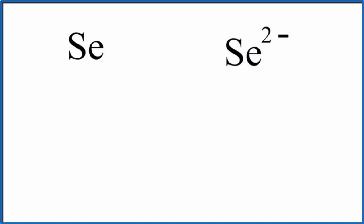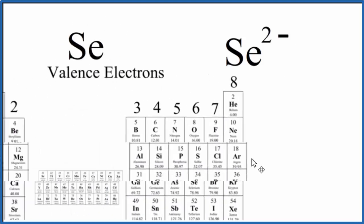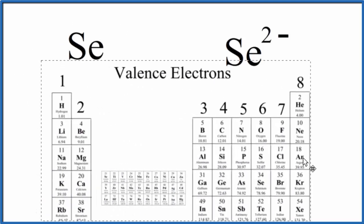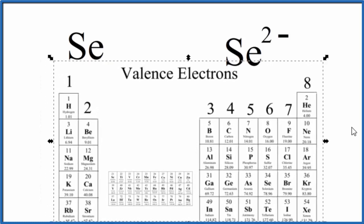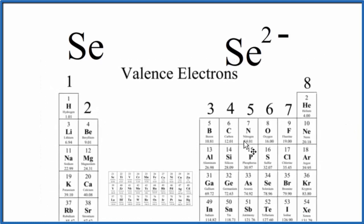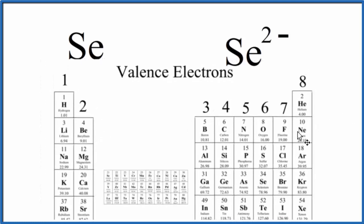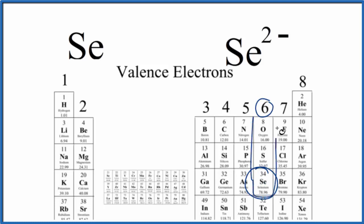If we look at the periodic table, this chart will give us an idea. Se is right here, in group 16, sometimes called 6A, which will have 6 valence electrons. So all of these elements here have 6 valence electrons.